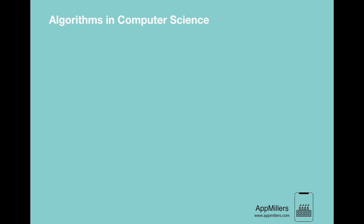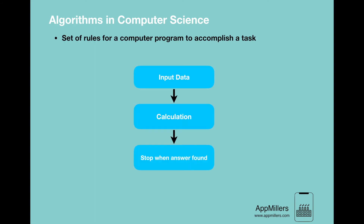In computer science an algorithm is a set of rules for a computer program to accomplish a task. Learning about different types of algorithms and knowing when to apply them allows us to write time and memory efficient programs.